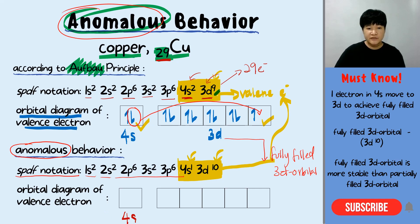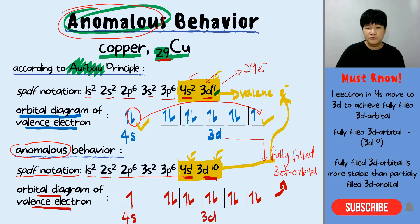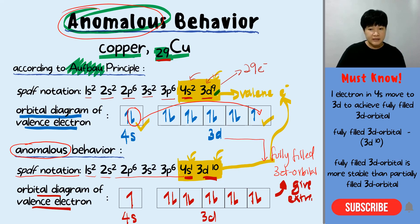One electron from the 4s is moved up to the 3d because we want to achieve the fully-filled 3d orbital. Looking at the orbital diagram for the valence electrons in the anomalous behavior: the 4s only has one electron left, and the 3d now has 10 electrons. Drawing it in the orbital diagram — singly first before pairing up — you realize the 3d orbital is now a fully-filled 3d orbital, which gives extra stability.